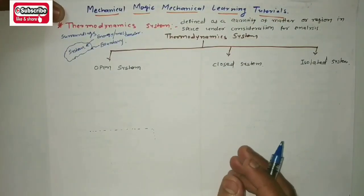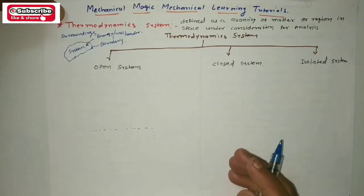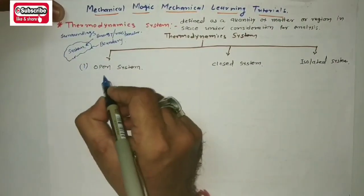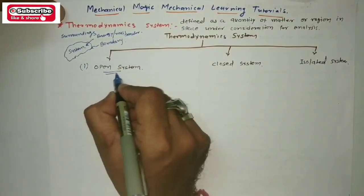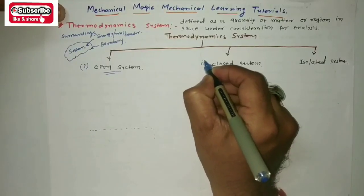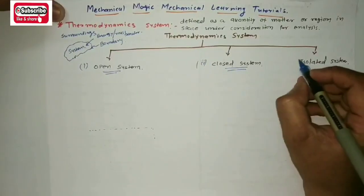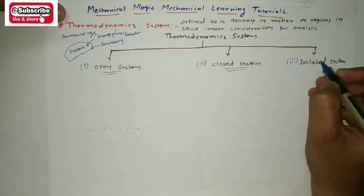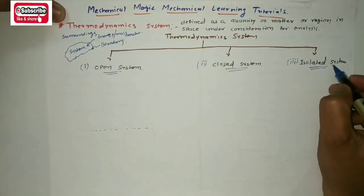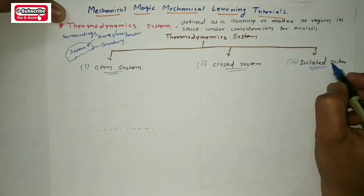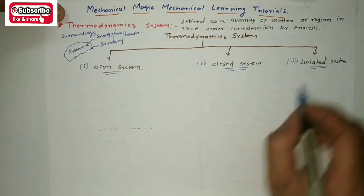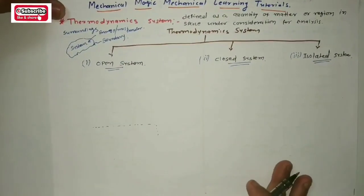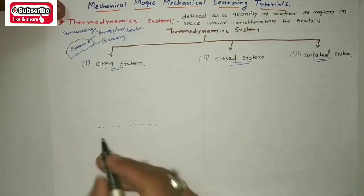In the case of thermodynamic systems, basically there will be three categories: open system, closed system, and the third one, isolated system. Let us see the first one — open system.